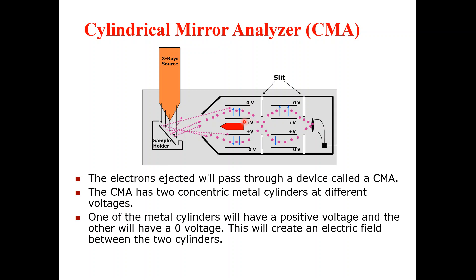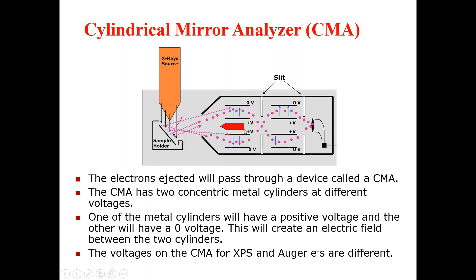The main purpose of this arrangement of the cylinders is that it will create an electric field between the two cylinders. One cylinder has been put at zero voltage and the other at positive voltage. The purpose of this voltage difference is to create an electric field between the two cylinders. Note that the voltage on the CMA for XPS and outer electrons are different from one another.